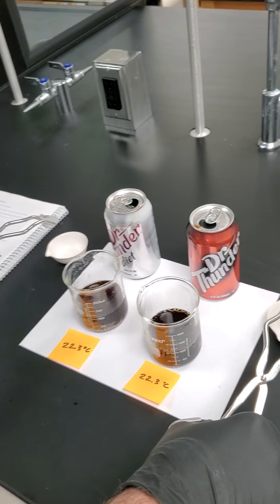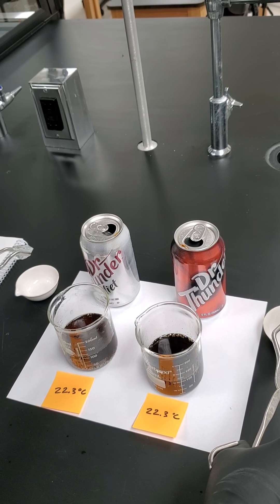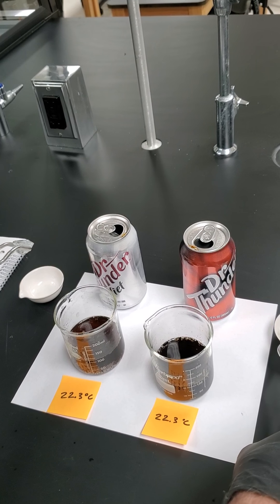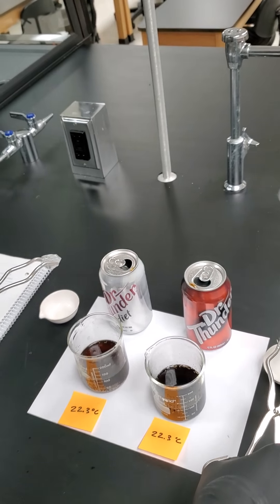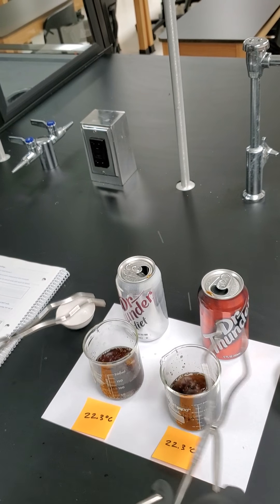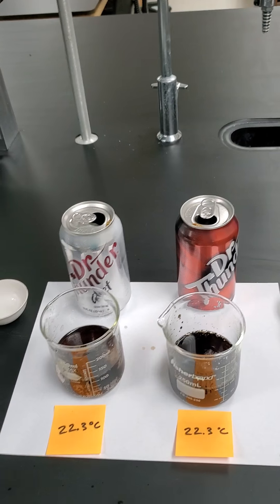Now we have our diet and regular soda measured by temperature, both 22.3 degrees because they're both the same room temperature. So now we're going to add our ice to our sodas at the same time. One, two, three, go. And we're going to come back when they melt.